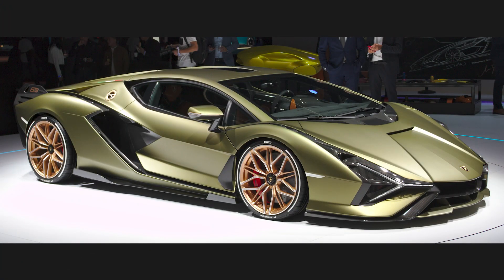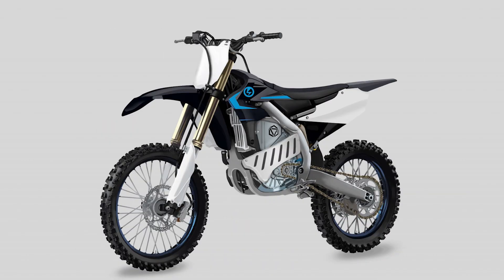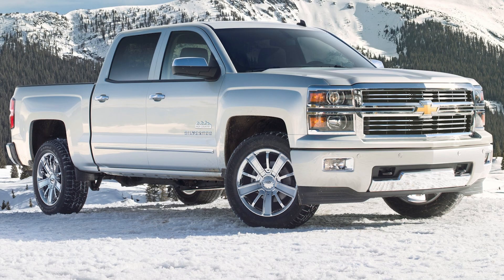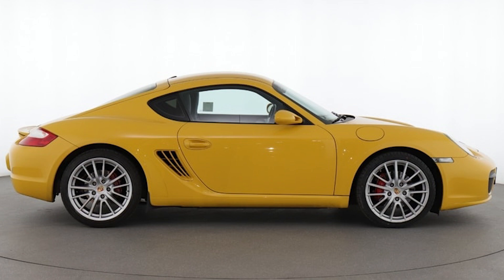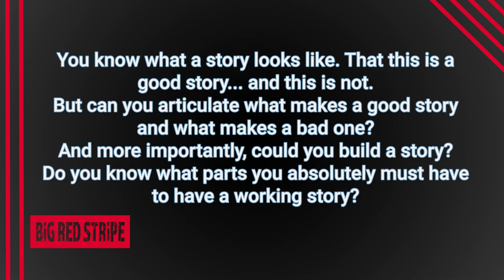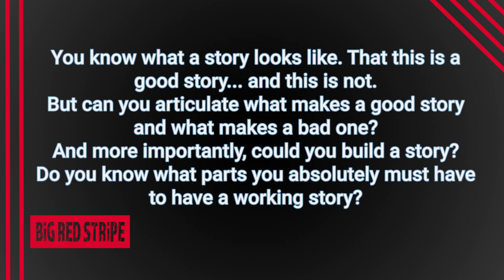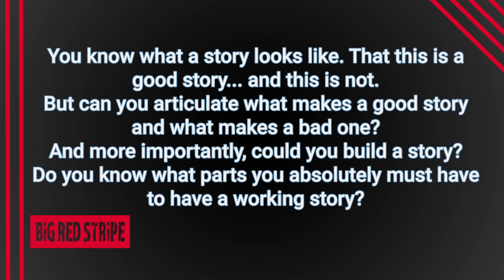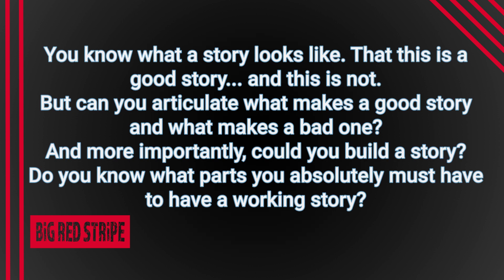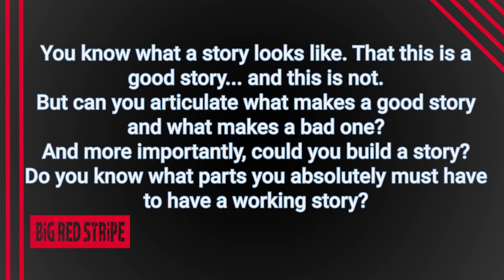A great example I've often used is one of cars. Because you've ridden in cars before, you've seen them, you know what a car looks like, and you can tell a good car from a bad one. But can you articulate what makes a car and what makes a truck? And more importantly, could you build a car? Do you know what parts you absolutely must have to have a working car? Now do all of that and replace the word 'car' with 'story.' You know what a story looks like, that this is a good story and that this is not. But can you articulate what makes a good story and what makes a bad one? And more importantly, could you build a story? Do you know what parts you absolutely must have to have a working story?